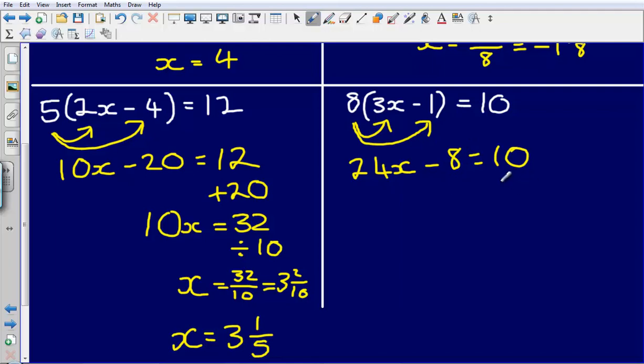To undo this minus 8 I'm going to do the reverse of minus 8, which is plus 8. So that leaves me with 24x is equal to 18.